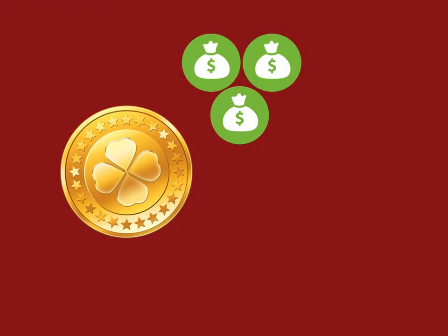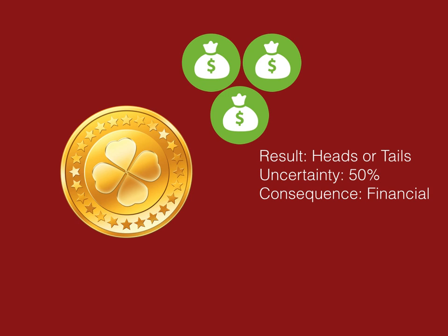Now let's spice this up. Let's say I've got that same coin and my friend comes along, and we do something known as gambling. I say to him: I will pay you three bags of money if it lands on heads, and you'll pay me three bags of money if it lands on tails. We still have the same uncertainty, but now there is a financial consequence to the result of this coin toss. If it lands on one side, I'm going to be richer; if it lands on the other, I'm going to be poorer. Thus, risk has been introduced — there's the risk that I may gain and the risk that I may lose. So risk can be both positive and negative.